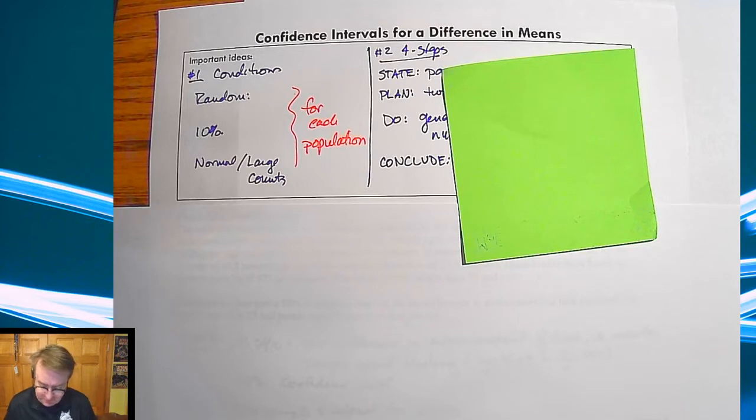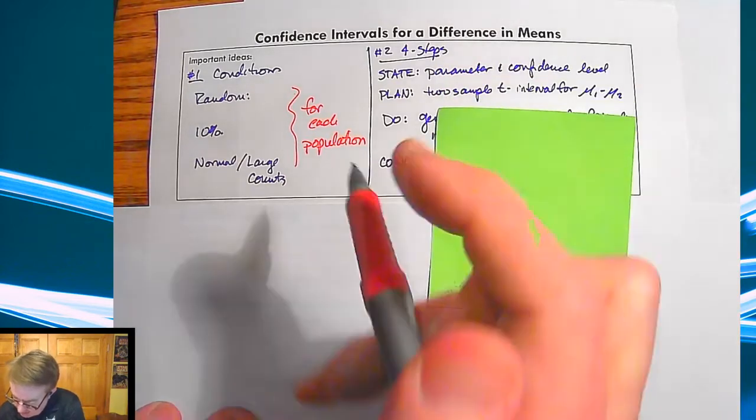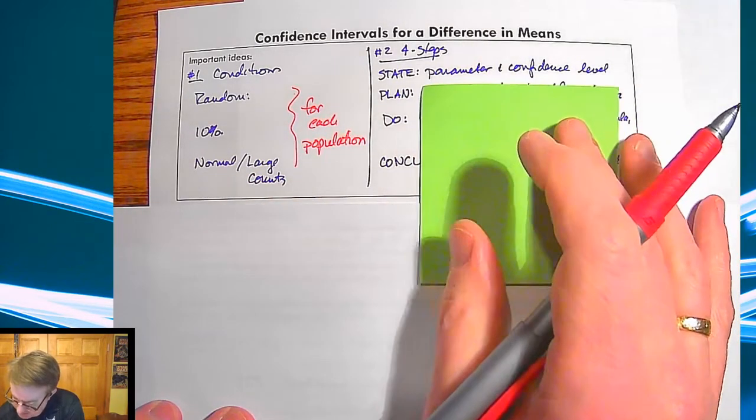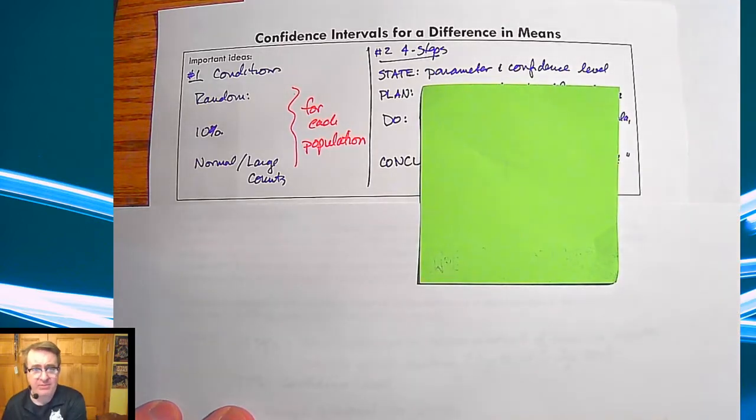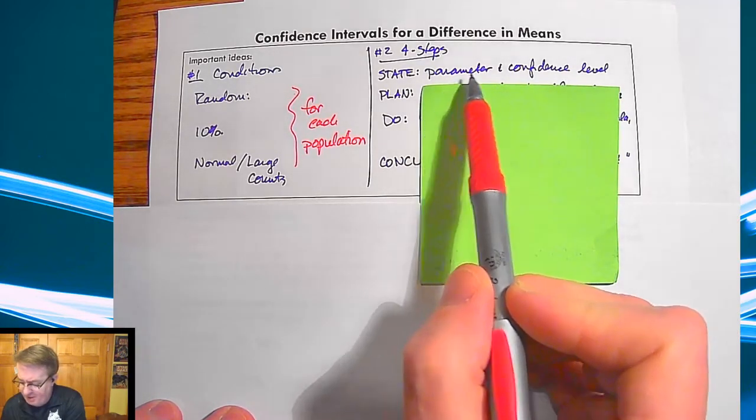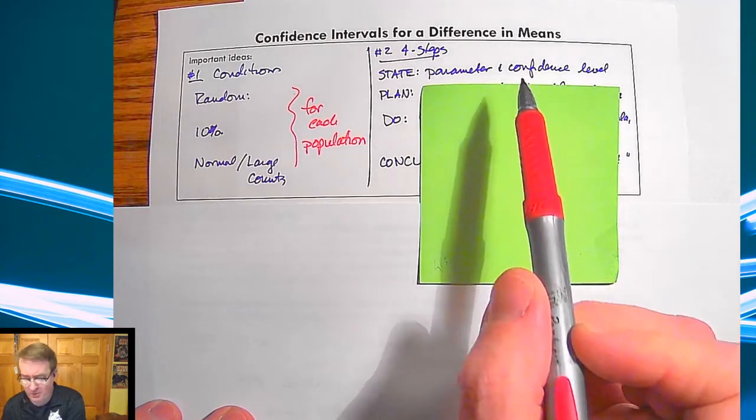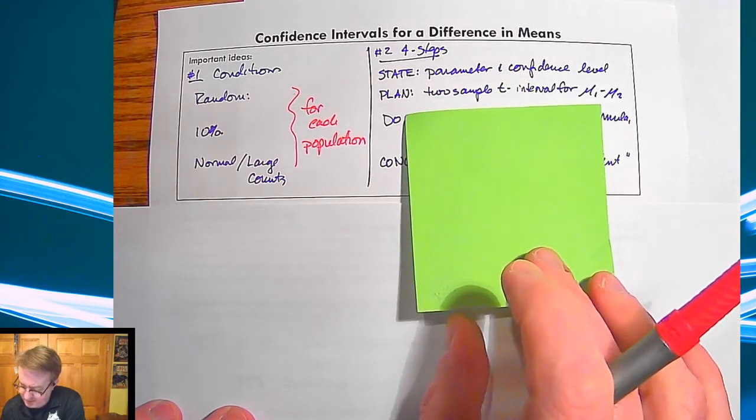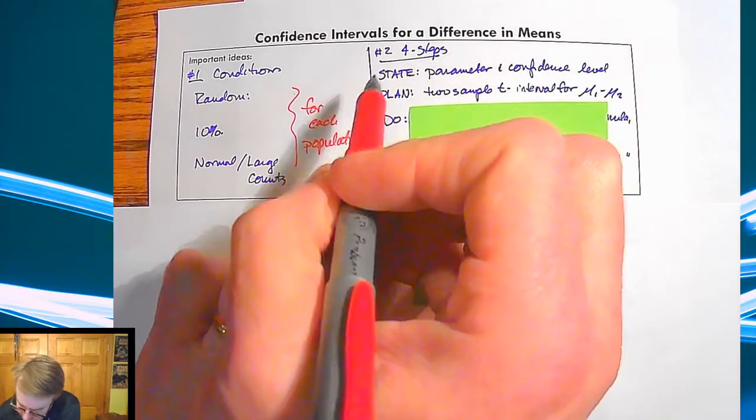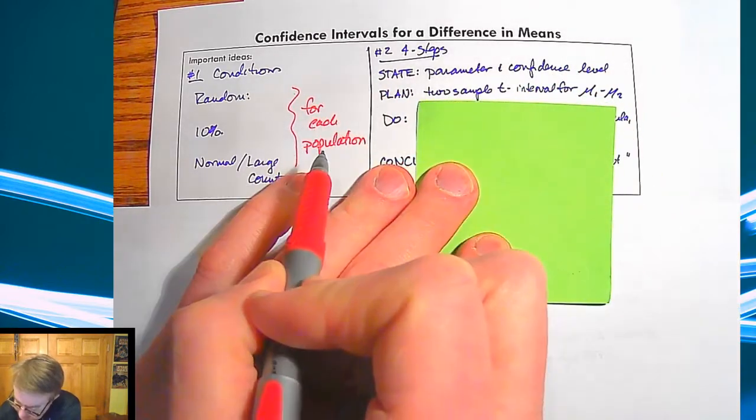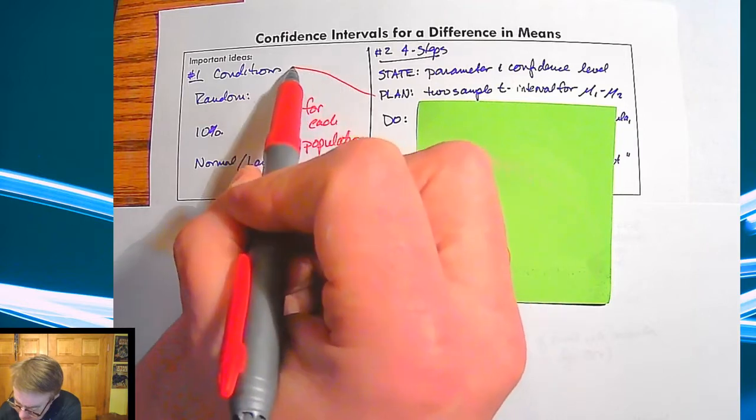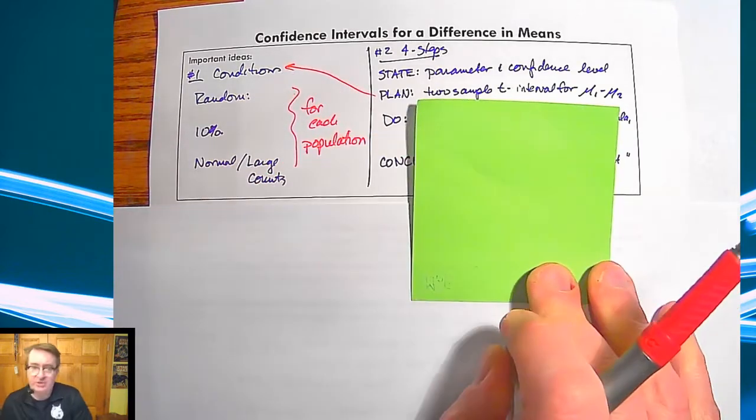In terms of the four steps, again very familiar: we talk about the parameters and the confidence level, about what we're going to go through and do for planning. We also need to make sure that we see we're doing a two sample t interval for a difference of means, and we have to go through and hit the conditions there.